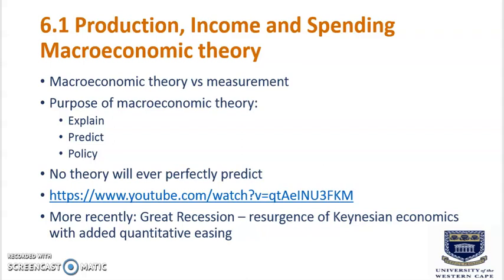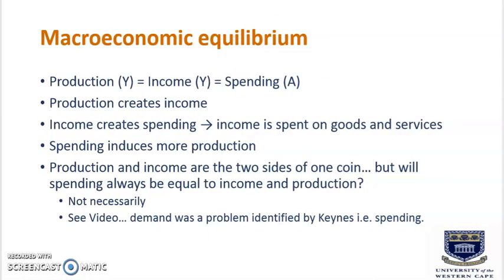In Keynesian economics, equilibrium production denoted by Y, which equals income also denoted by Y, is equal to spending denoted by A. Production creates income, and income creates spending — income is therefore spent on goods and services. Spending then induces more production. Production and income are the two sides of one coin.